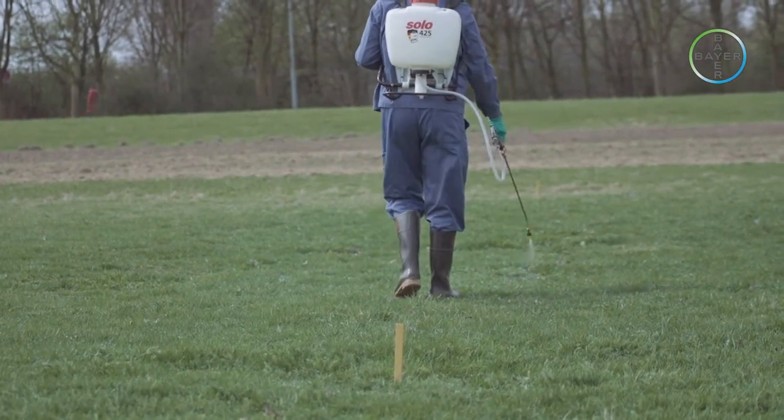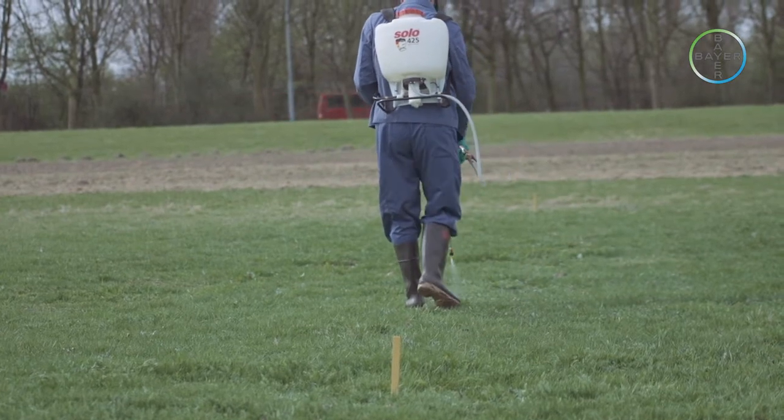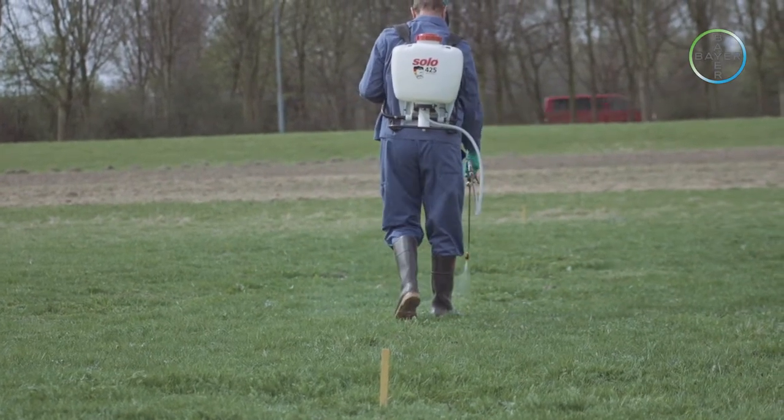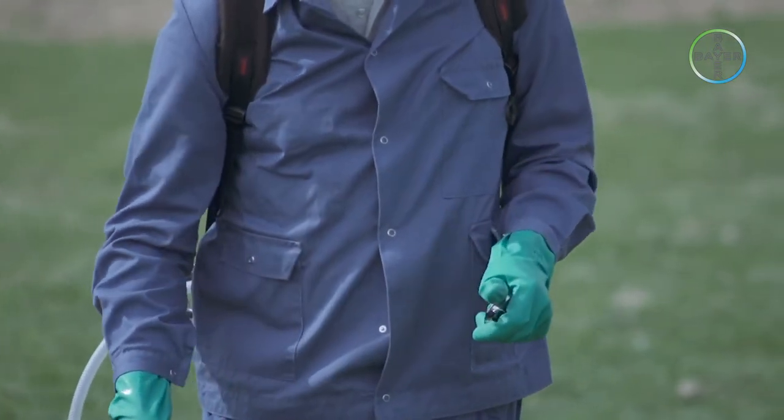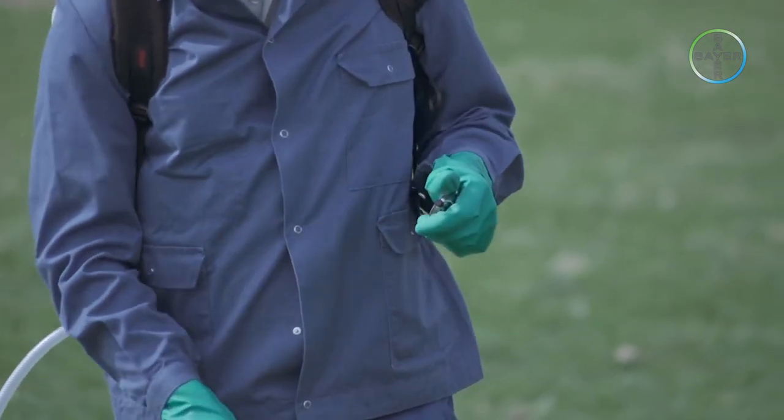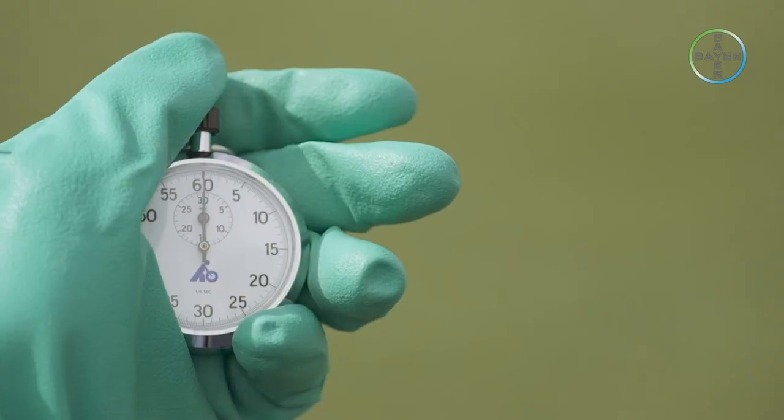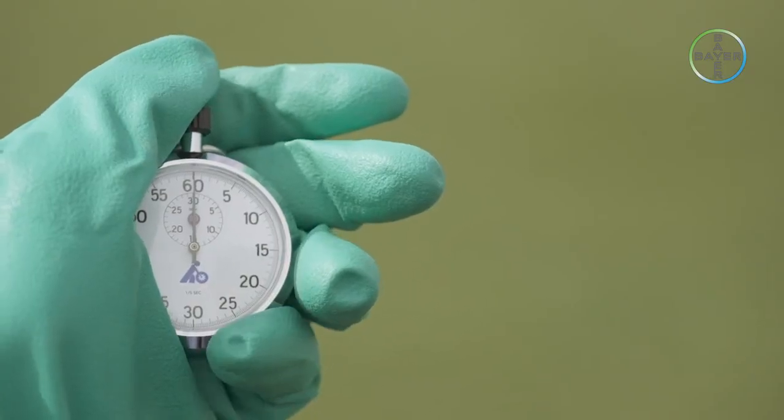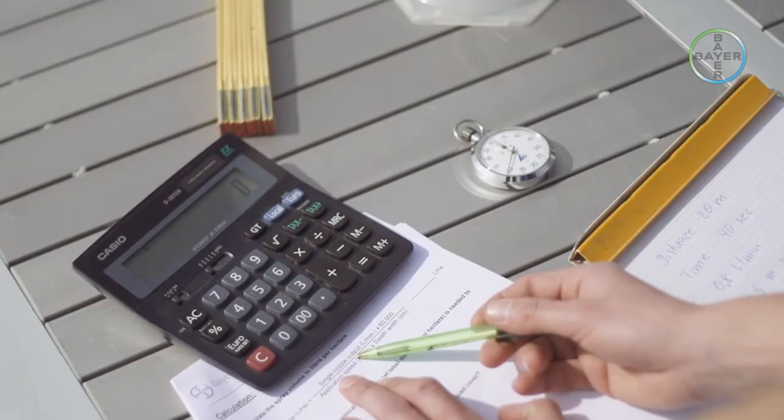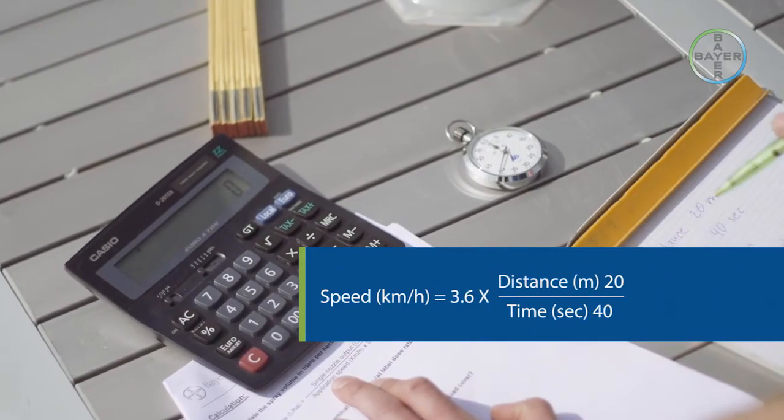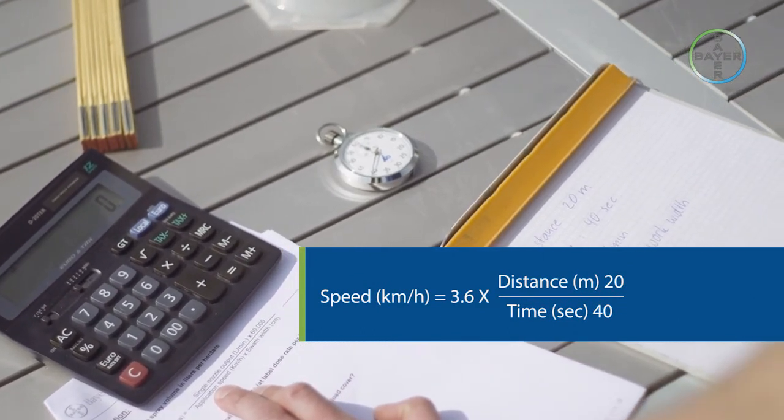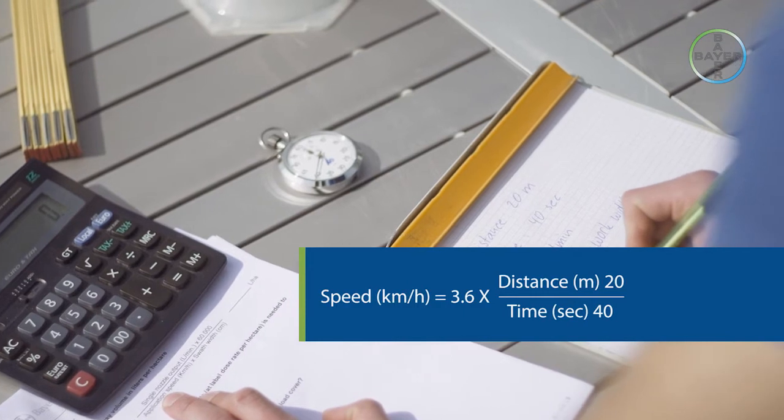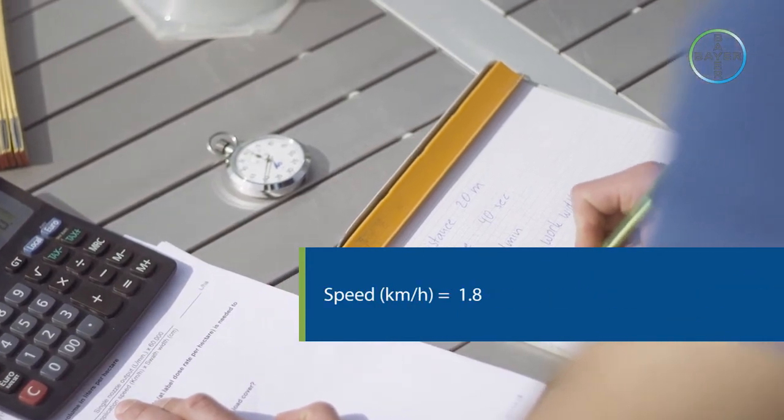Walk the measured distance of 30 meters at a steady pace, spraying with the nozzle at an appropriate height for the intended crop, usually around knee height for low row crops, and pumping continuously as close as possible to what you would need to do in a typical operation in the field. Record the time in seconds needed for the 20 meters and calculate your walking speed. Speed in kilometers an hour equals 3.6 times distance in meters, 20, over time in seconds, 40, equals 1.8 kilometers an hour.